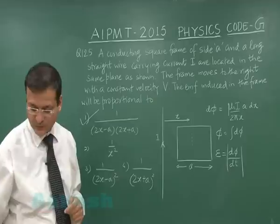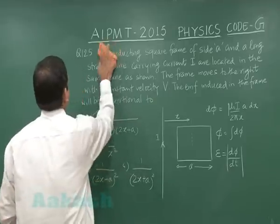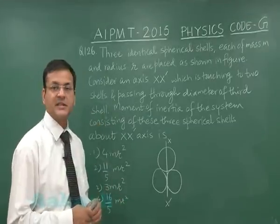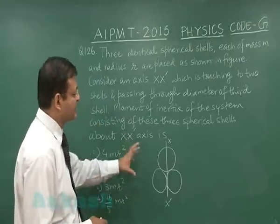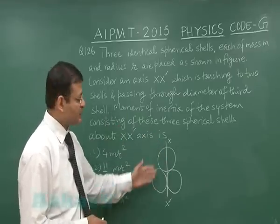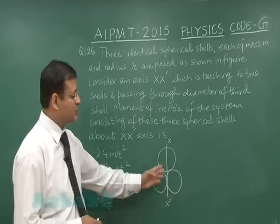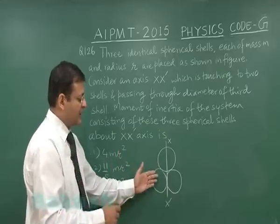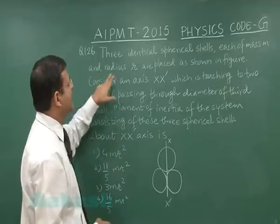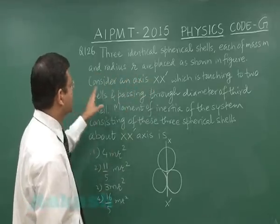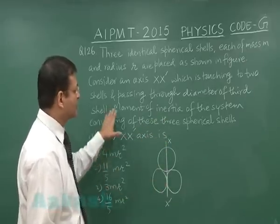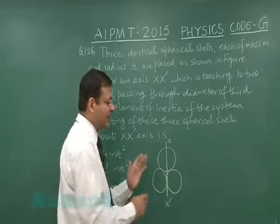Now let us switch over to question number 126. This question number 126, it is based on calculating moment of inertia. You have been given three hollow spherical bodies, spherical shells they are calling, and they are arranged this way. Axis XX dash is passing through one of the diameters and it is through the touching point of the lower two spherical shells. It says that three identical spherical shells each of mass m and radius r are placed as shown in the figure. Consider an axis XX dash which is touching to two shells and passing through diameter of the third one. You have to calculate the moment of inertia about that.